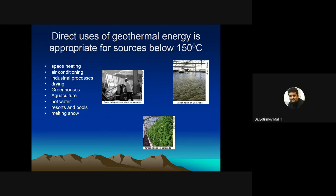Direct use of geothermal energy is appropriate for sources below 150°C. It can be used for space heating, air conditioning, industrial purposes, drying, greenhouses — for example, a greenhouse heated by geothermal energy. It can also be used for aquaculture, such as a fish farm where the water temperature is elevated to allow exotic fish to survive in cold climates, as well as for resorts and pools where people enjoy bathing in hot water.